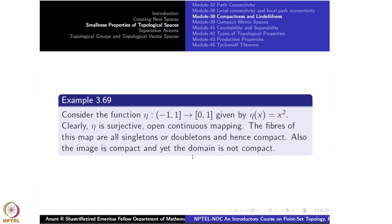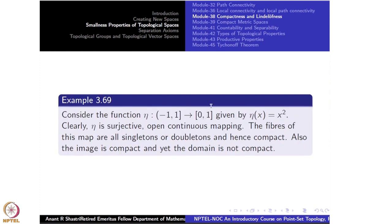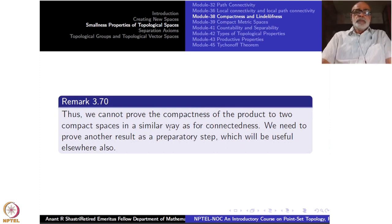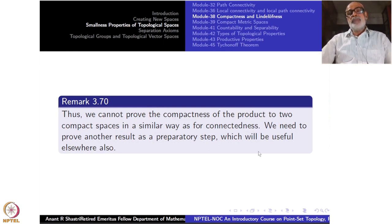This example shows that we cannot prove compactness of the product of two compact spaces in the same way as for connectedness. For connectedness, one takes the projection X × Y → Y, notes Y is connected and each fibre X × {y} is homeomorphic to X hence connected, and concludes X × Y is connected. That kind of proof is not possible for compactness.